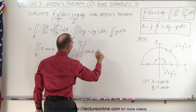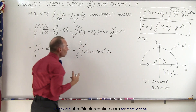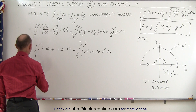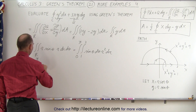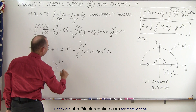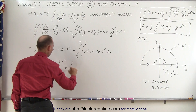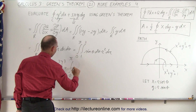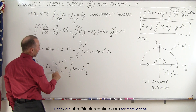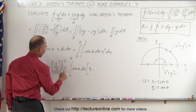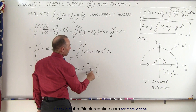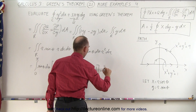We can integrate over r first. This is equal to the single integral from 0 to pi of the sine of theta d theta, multiplied by r cubed over 3 evaluated from 1 to 3. Plugging in the upper limit we get 27 divided by 3 which is 9, minus plugging in the lower limit we get 1 third. So that would be 27 over 3 minus 1 over 3, which is 26 over 3.